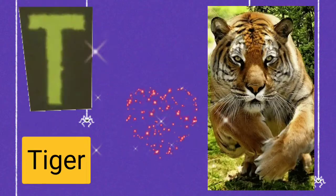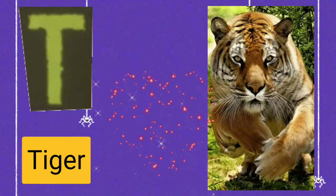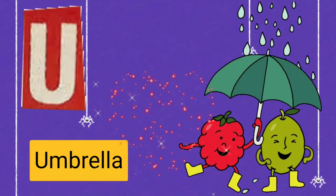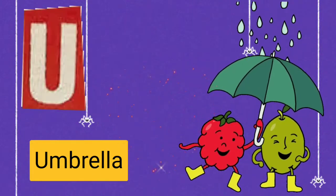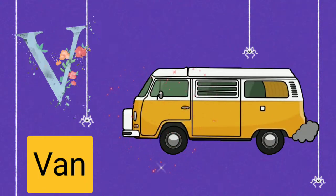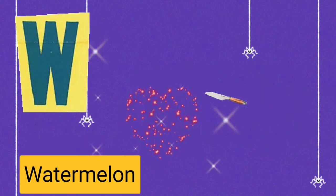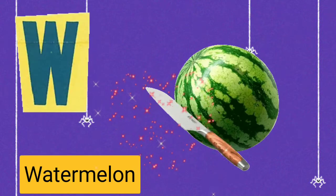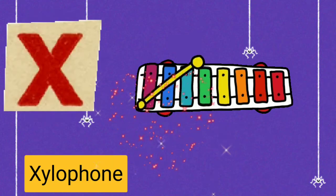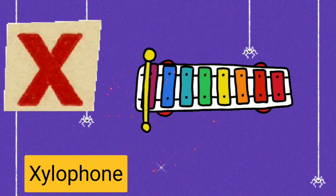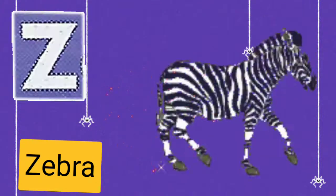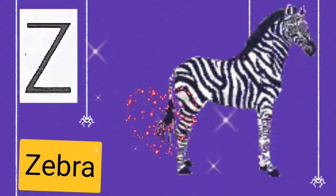T for Tiger, U for Umbrella, V for Van, W for Watermelon, X for Xylophone, Z for Zebra.